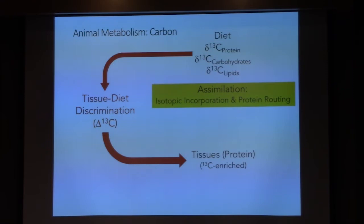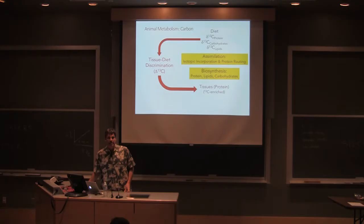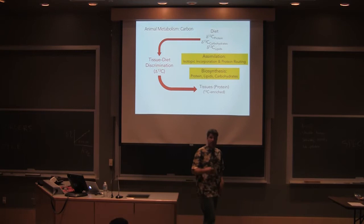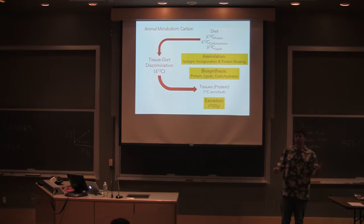We assimilate these different things to different degrees and we can route them into tissues if we need to. We biosynthesize protein to maintain our tissues or to grow, but we also need to make lipids and carbohydrates. We excrete it, and the major form of excretion for carbon is CO2. That's the main way we lose carbon.